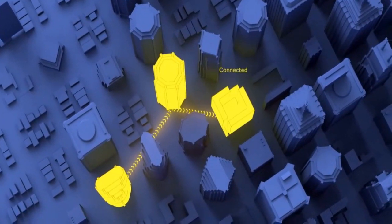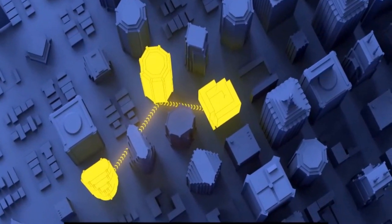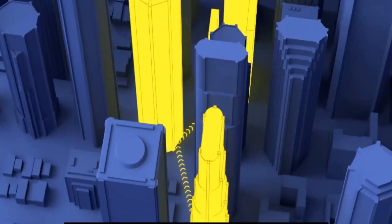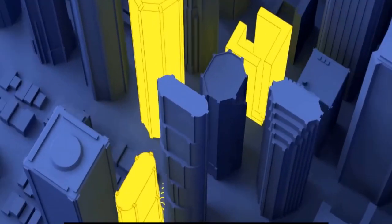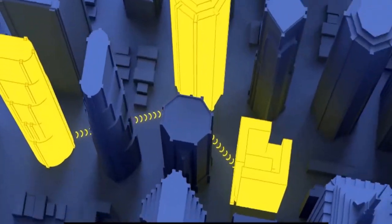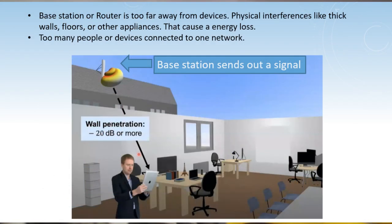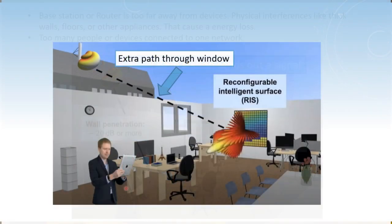IRS are a groundbreaking innovation that can manipulate electromagnetic waves to enhance wireless communication performance. They are the unsung heroes in the fight against weak signals, physical interferences, and network overloads.